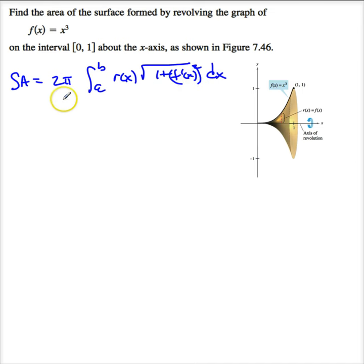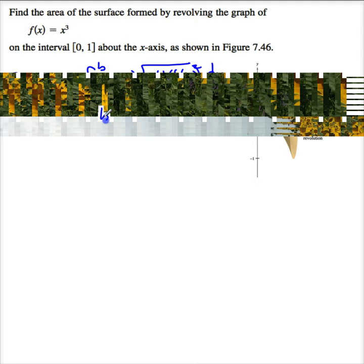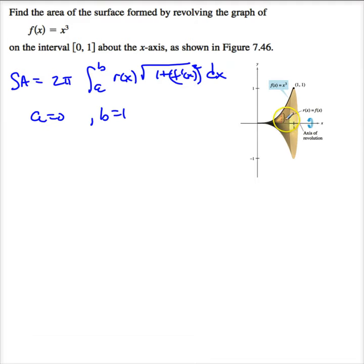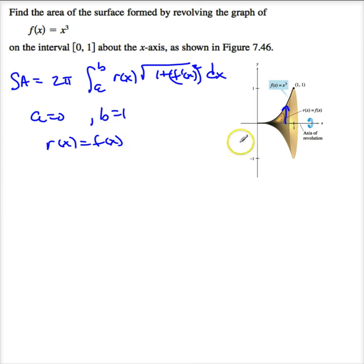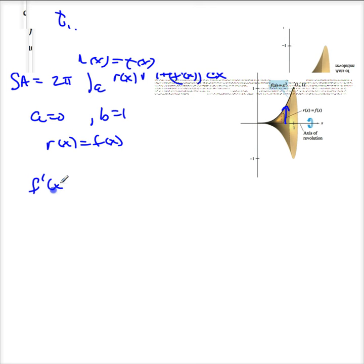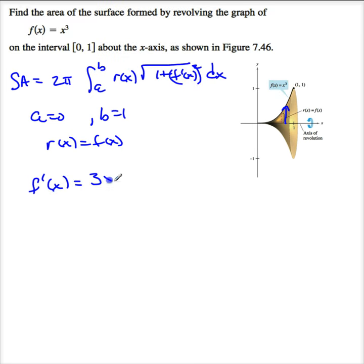Now in this case, we need to identify some things. a is 0, b is 1. r is this distance to the axis of revolution, so in this case r(x) is just f(x). And now we need to find f'(x). f'(x) equals 3x².